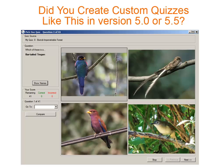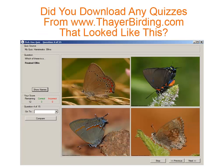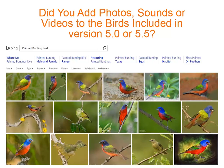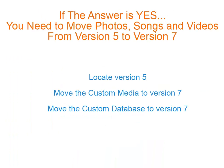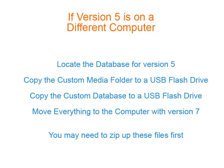Did you create any custom quizzes using the Gold Edition of our software? Have you downloaded any free quizzes from thayerbirding.com? Or have you added any photos, sounds, or videos that you found on the internet? If you've taken advantage of any of these advanced features in the Gold Edition, it means that you do need to move photos, songs, and videos from version 5 into version 7.